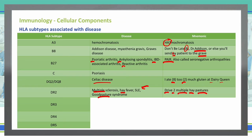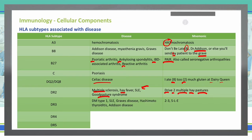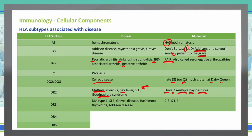HLA-DR3 is associated with type 1 diabetes, lupus/SLE, Graves' disease, Hashimoto's thyroiditis, and Addison's disease. Remember '2-3-SLE' to help recall that SLE is in both DR2 and DR3 — so DR2, DR3, SLE.